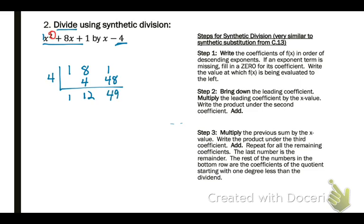And now we're going to start one degree less than what we were dividing, so that's x squared, so our first variable exponent that we'll put in is to the first power. So one x plus 12 plus 49 over what we're dividing by x minus four. And remember, you can also write that with just the remainder off to the side.